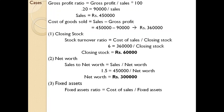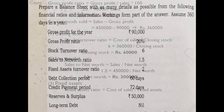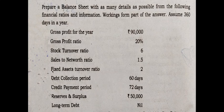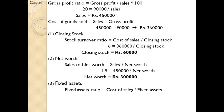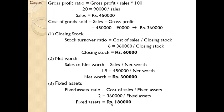For fixed assets, the fixed asset turnover ratio equation is cost of sales divided by fixed assets. The fixed asset turnover ratio is given as 2, and there is no other information regarding fixed assets. Cost of sales is 3,60,000, so fixed assets equals 3,60,000 divided by 2, which is 1,80,000.